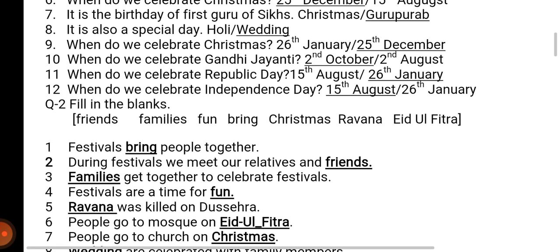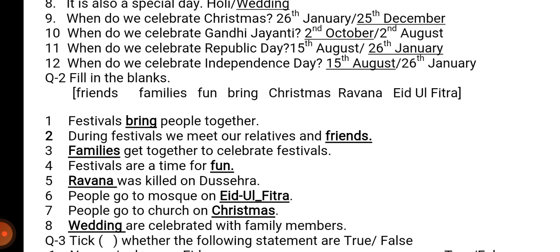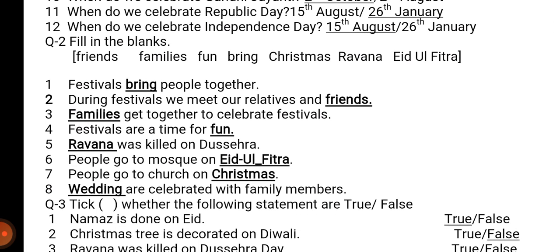Number 5: Blank was killed on Dasera – Dasera ke din kisko mara tha? Ravan. Number 6: People go to mosque on blank – Muslim log Eid ul-Fitr ke din. Number 7: People go to church on blank – Christian log Christmas ke din jate hain. Number 8: Blank are celebrated with family members – Weddings, yani marriage.